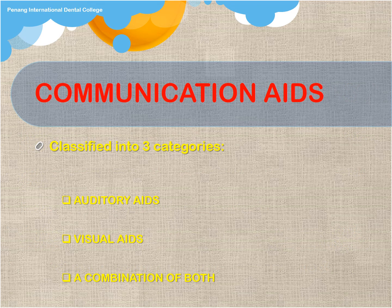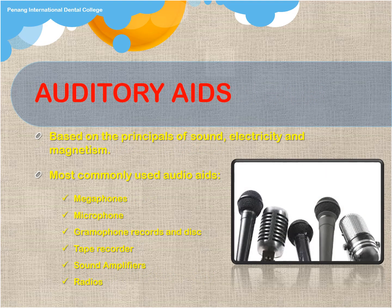Communication aids are classified into three categories: auditory aids, visual aids, and a combination of both. Auditory aids are based on the principles of sound, electricity, and magnetism. The most commonly used audio aids are megaphones, loudspeakers, microphones, gramophone records and discs, tape recorders, sound amplifiers, and radios.